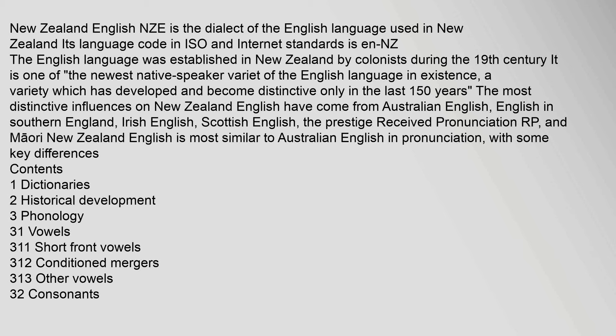New Zealand English (NZE) is the dialect of the English language used in New Zealand. Its language code in ISO and internet standards is en-NZ. The English language was established in New Zealand by colonists during the 19th century. It is one of the newest native speaker varieties of the English language in existence, having developed and become distinctive only in the last 150 years. The most distinctive influences have come from Australian English, English in Southern England, Irish English, Scottish English, the prestige Received Pronunciation (RP), and Māori.